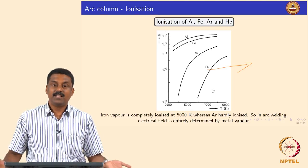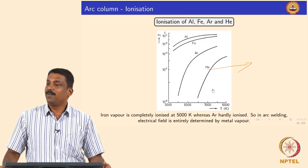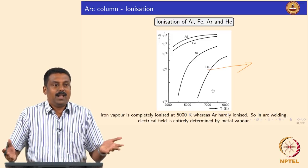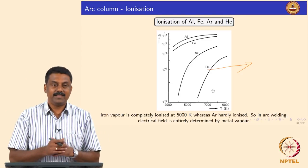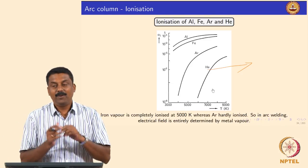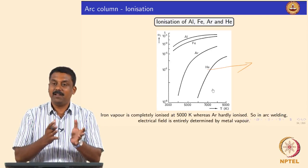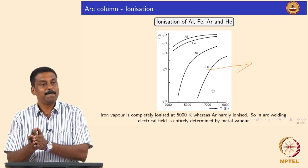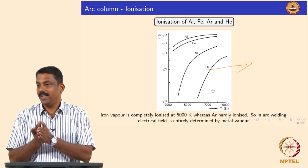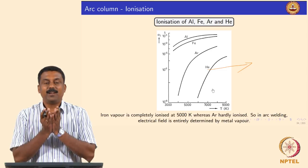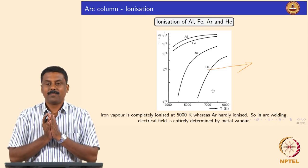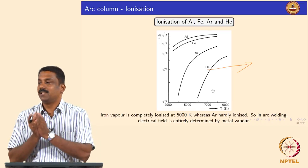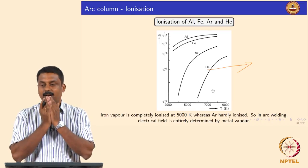Metal vapors are also a gas, so subsequently they will also ionize. Because metal vapor is a gas, it would also ionize. But if you look at the ionization energy of these metal vapors, they are much, much lower than the inert gases you use. For example, if you are welding iron or steel, the ionization energy of the iron vapor is much lower than the shielding gas — either helium or argon.